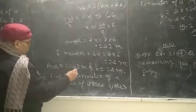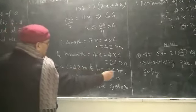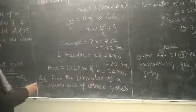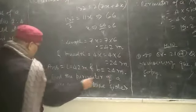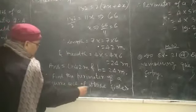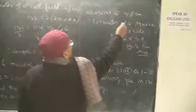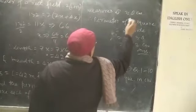Therefore, answer is equal to 42 meters and 24 meters. Now, next question says find the perimeter of a square, each of whose sides measures 3.8 cm.